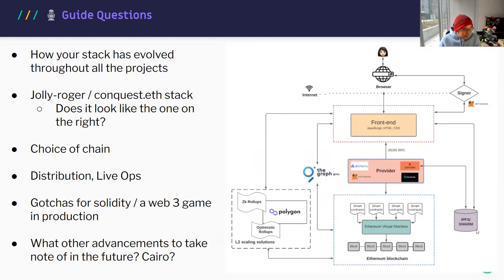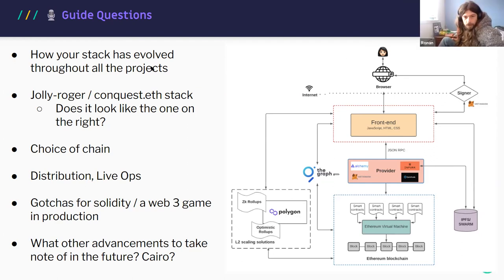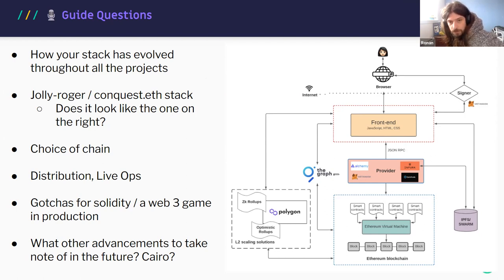Moving to the technical discussion: the host references an article shared in the Kernel gaming guild on the architecture of a web3 application. He asks Ronan whether this architecture matches how he's building Conquest. For the first alpha of Conquest, there wasn't even The Graph — it was completely decentralized with no reliance on any external indexer. Ronan wanted to push that to its limit to see how far pure decentralization could go.